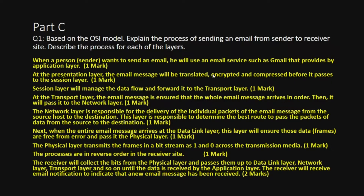The sender wants to send an email using a service such as Gmail — this happens at the Application Layer. Then it moves to the Presentation Layer, where the email message is translated, encrypted, and compressed before being passed to the Session Layer. At the Session Layer, data flow is managed and forwarded to the Transport Layer, where the email message is ensured to arrive in order. At the Network Layer, individual packets of the email are routed from source to destination, determining the best path.